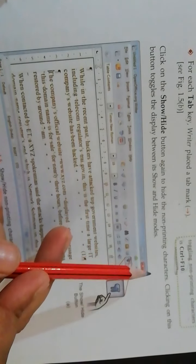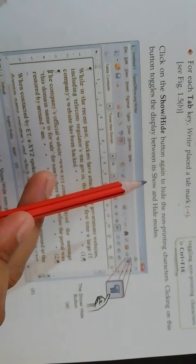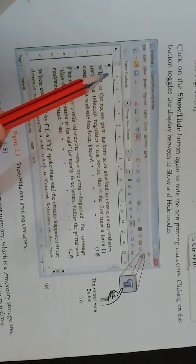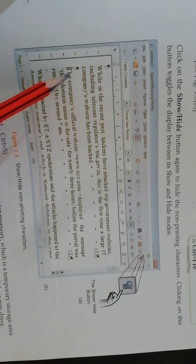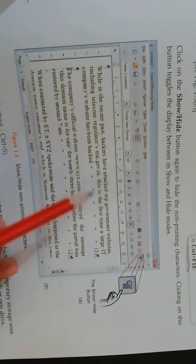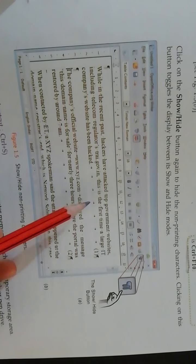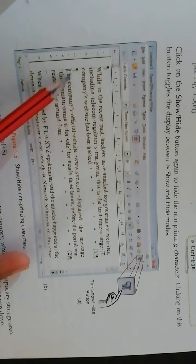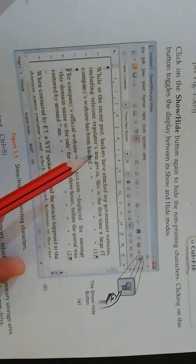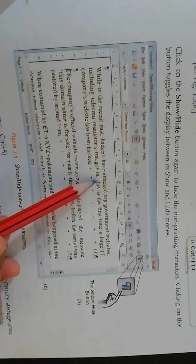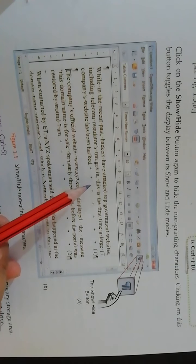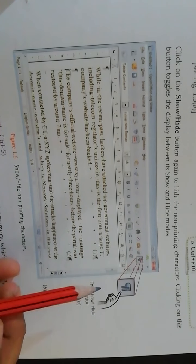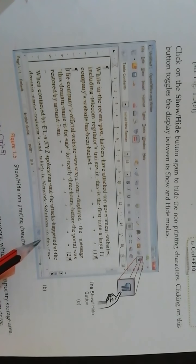Click on the Show/Hide button again to hide the non-printing characters. Clicking on the button toggles the display between its show and hide modes. In this document, you will see where the tab is — here the enter key hit shows a paragraph symbol. There is a tab shown as an arrow, and where you hit the enter key those symbols appear. Where there is a dot, that is where the space is. This makes it clear where the spaces, tabs, and enter key presses are — this is called Non-Printing Character.